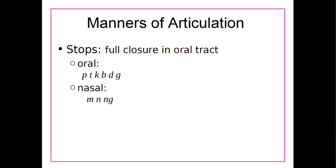Sounds are generally considered oral by default, so we only need an extra descriptor when the airflow isn't primarily going through the mouth. For example, the nasal stops M, N, and NG are called nasal stops because the airflow goes through the nasal cavity rather than primarily through the mouth. The oral stops in English are P, T, K, B, D, and G. The nasal stops in English are M, N, and NG.